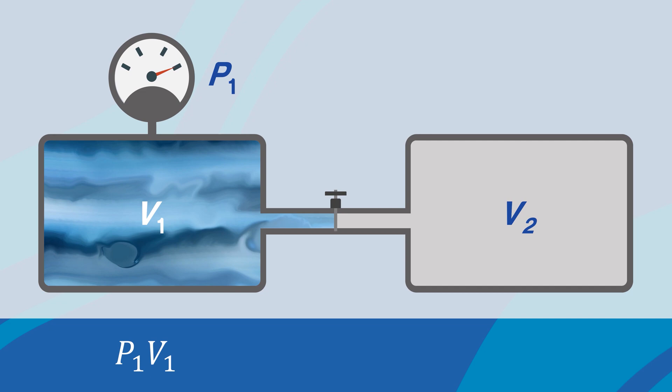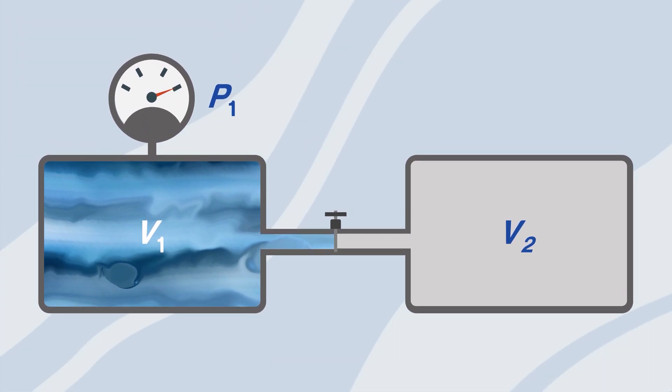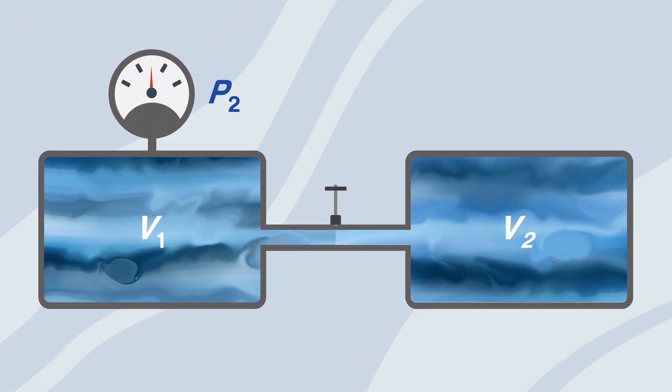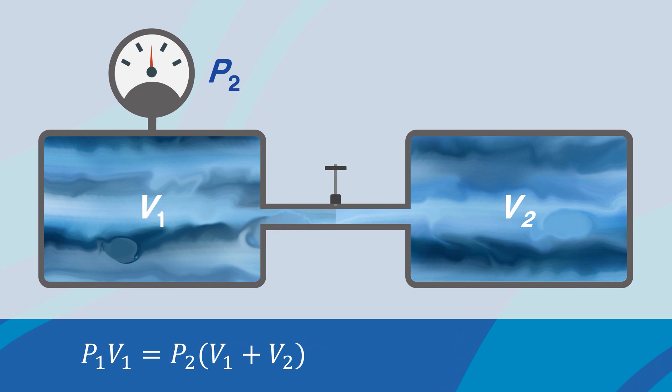Second, if we open the valve to chamber 2, then Boyle's law becomes p1v1 equals p2 times v1 plus v2.